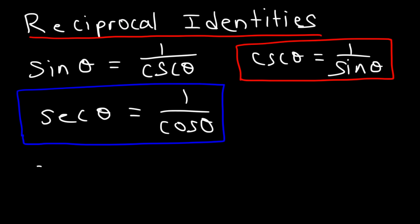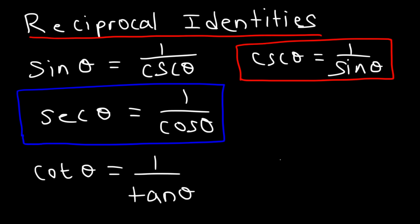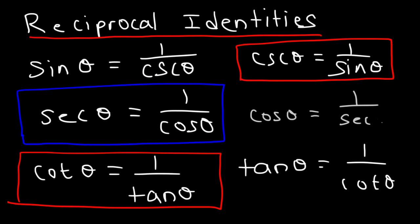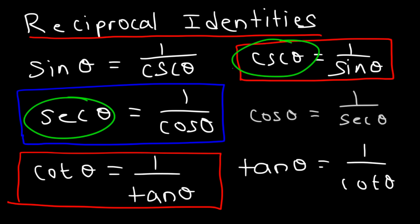Now, cotangent is 1 divided by tangent, and tangent is also 1 divided by cotangent — that one is more commonly used. Cosine is 1 over secant, though you're not going to use that often. The ones that are highlighted in boxes — secant, cosecant, and cotangent — are the ones I would commit to memory. You should know those three. So those are the reciprocal identities that you need to be familiar with.